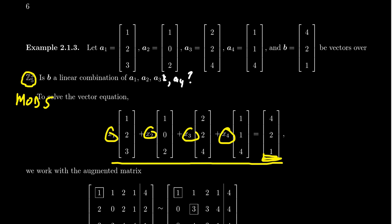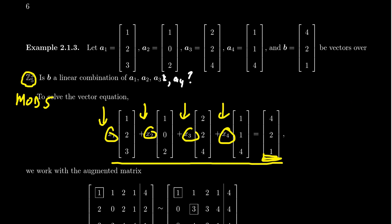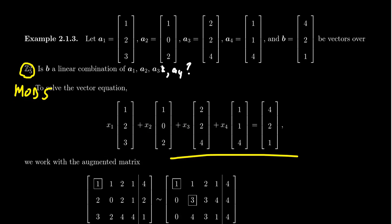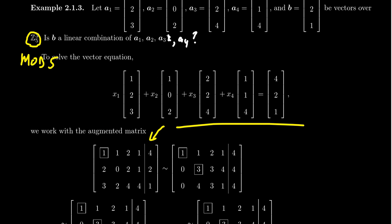Since we're working mod five, you might think you could just try every possibility — there are only five options for each of the four scalars. But that's five to the fourth, which is 625. That's a lot of possibilities. You might be better off just solving it rather than guessing and checking. So we're going to solve this using elimination techniques and row operations.